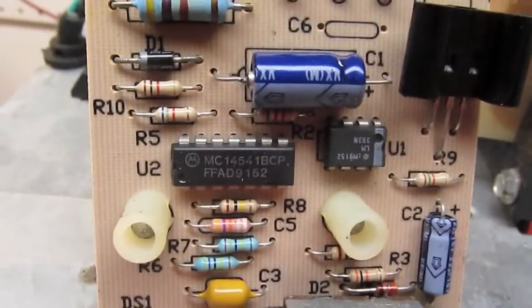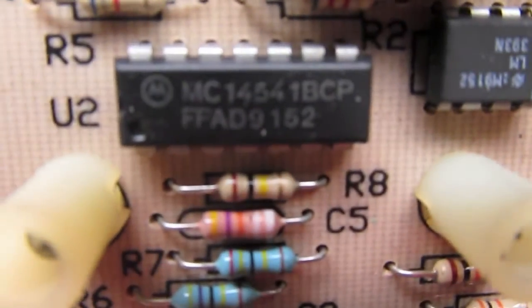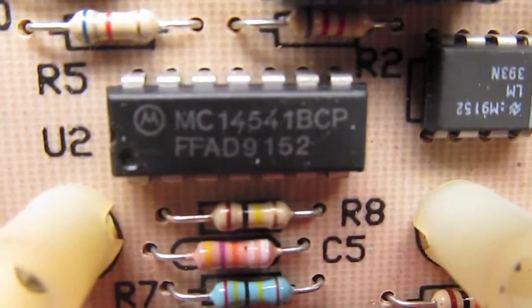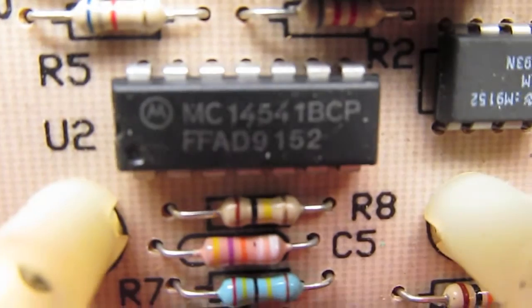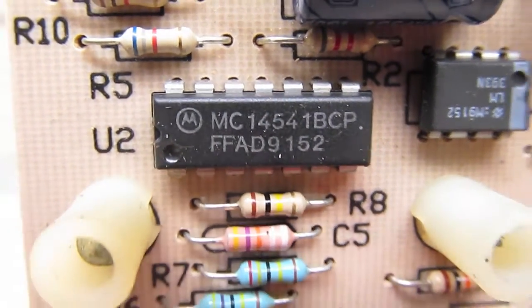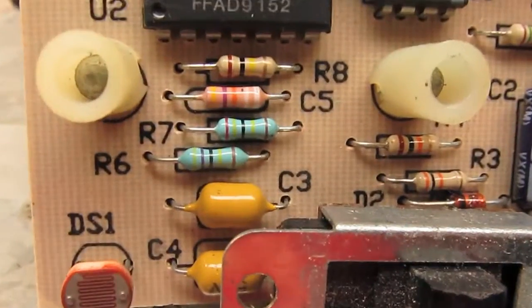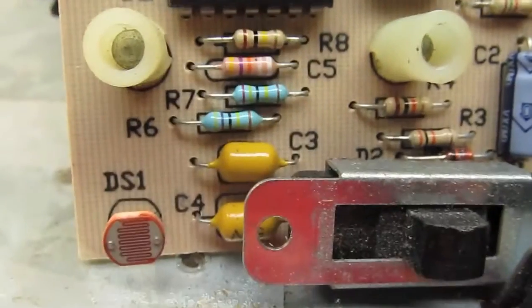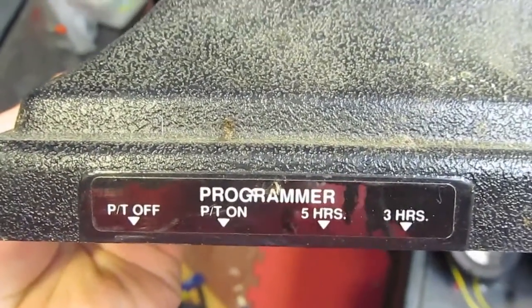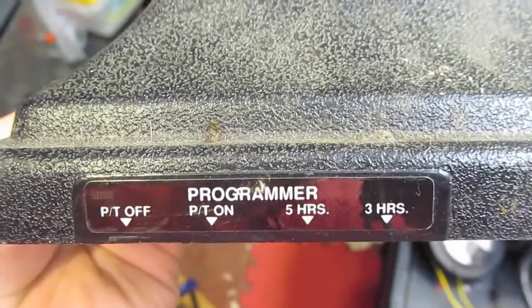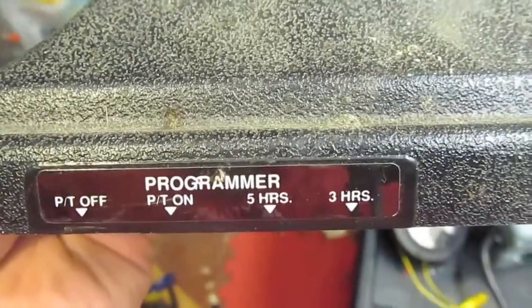So for the actual two DIPs, there's an MC14541B. I found info on that—it's just a programmable timer, just as expected. Those capacitors and resistors do the programming of the different intervals. I think it still has a label on the case down here. Yeah, it has turn off when it's bright, turn off when it's dark, turn on when it's dark, five hours timer, and a three hours timer option for the different positions on the switch.